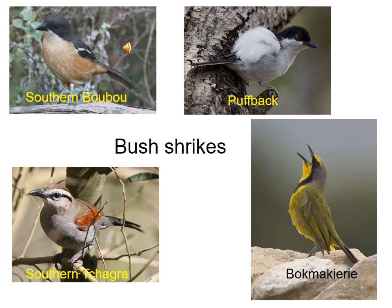There are also characteristic bush birds, often known as bush shrikes. Some are very melodious, like the bokmakierie, which duets with its partner. Others have characteristic displays, like the puffback, which erects the feathers on its rump to create a fluffy snowball appearance. More skulking birds include the southern boubou and southern tchagra, which tend to skulk in the undergrowth searching for insects.